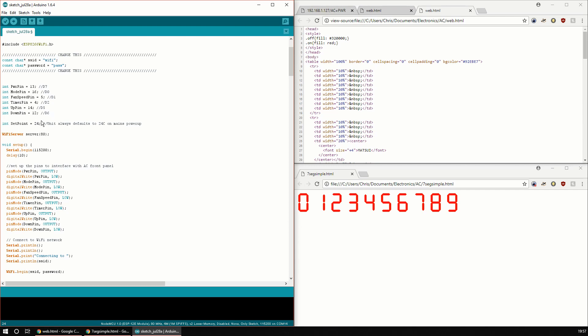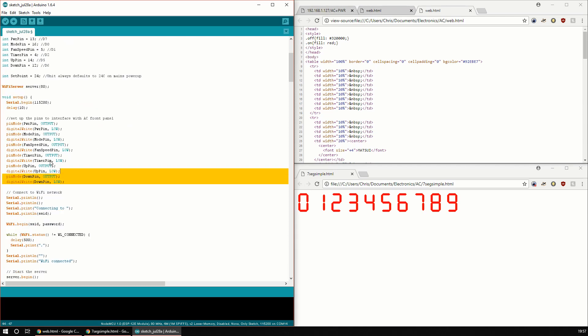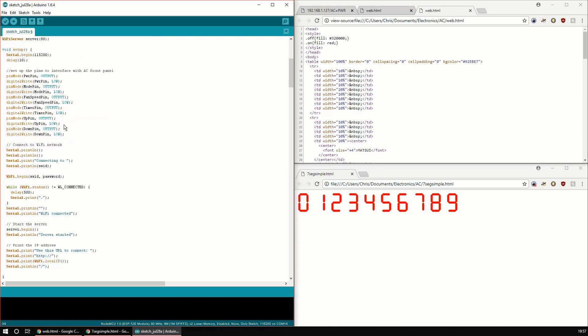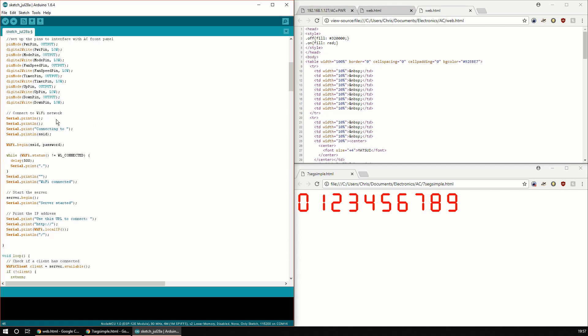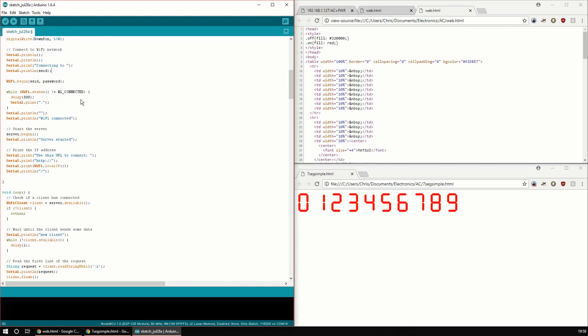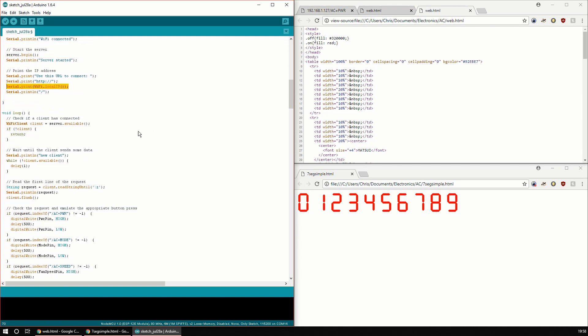When you switch the aircon unit on, when you switch on the mains at least, it always sets itself to 24 degrees C by default. We set up all of the IO pins as outputs and write them all low by default. Then it connects to the Wi-Fi network and it will give you the IP address over the serial port. The first time you run it, you just open the serial monitor and it will tell you the IP address. You can also look that out through your router's configuration page.